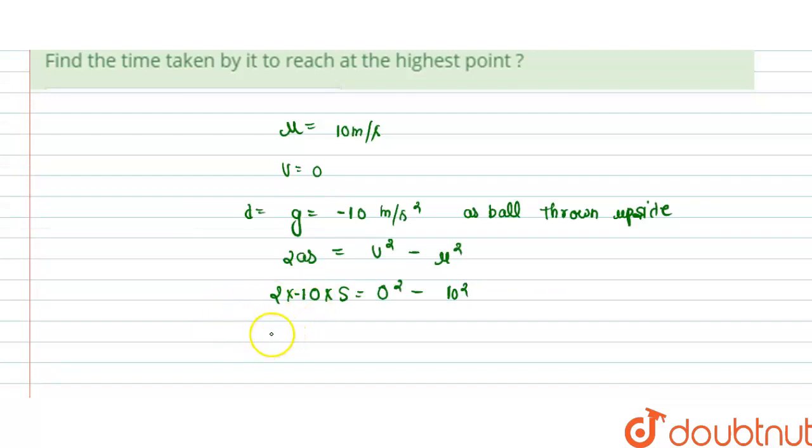We get minus 20s equals minus 100, and s equals 100 upon 20.